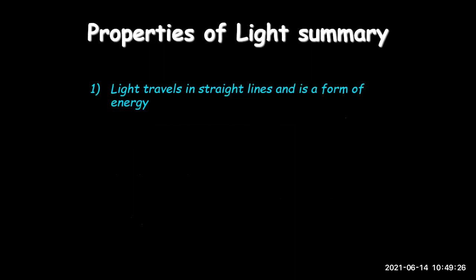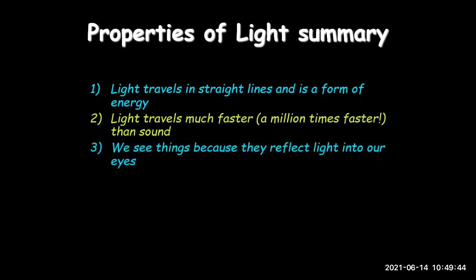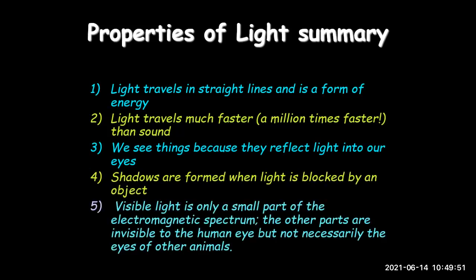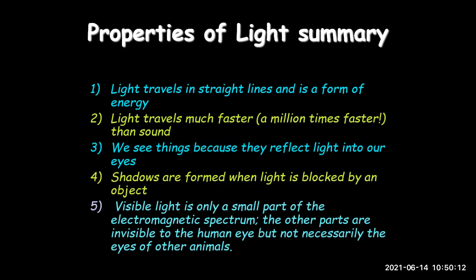Summary of properties of light: First, light travels in a straight line and is a form of energy. Second, light travels much faster than sound — examples include thunder and lightning and a firing pistol. Third, we see things because they reflect light into our eyes. Fourth, shadows are formed when light is blocked by an object. Fifth, visible light is only a small part of the electromagnetic spectrum; other parts are invisible to the human eye but visible to some animals.